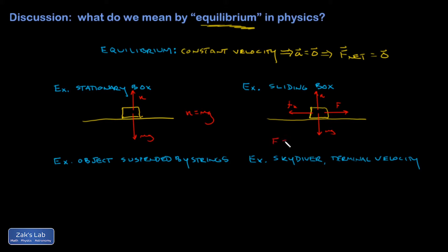So if my applied force to the right was equal to the kinetic friction force and n is equal to mg, I end up with a net force of zero, and I can have this thing just sliding along at a constant velocity.